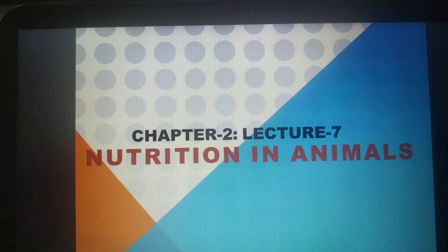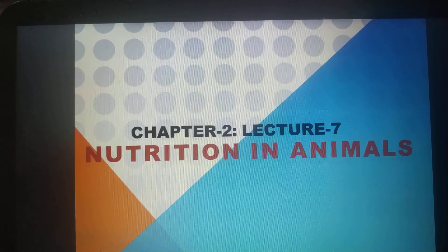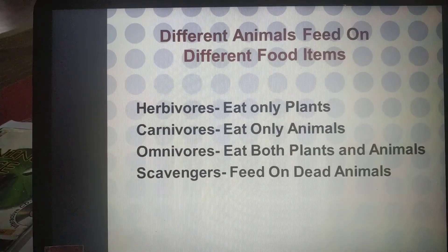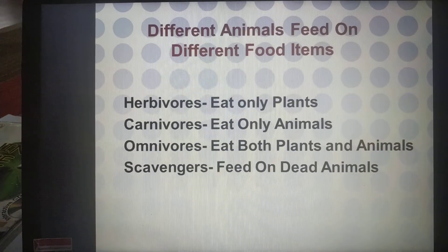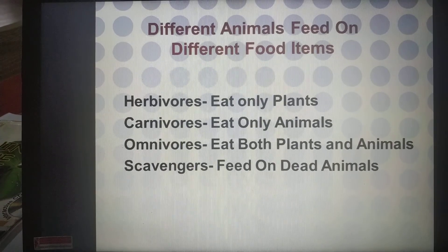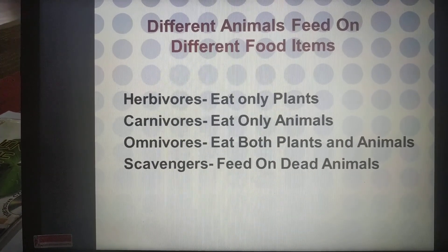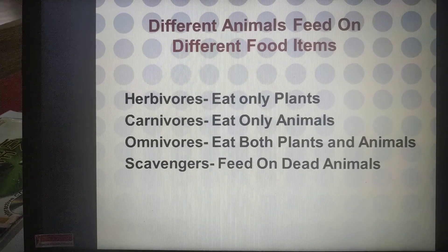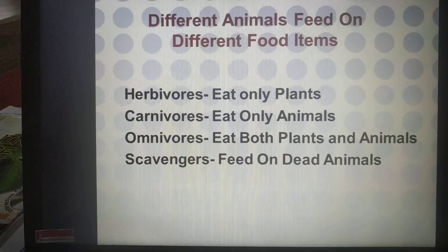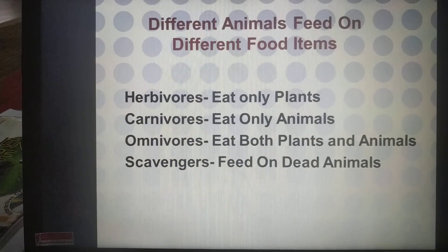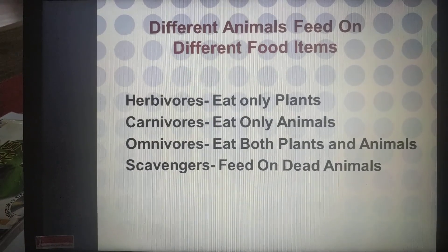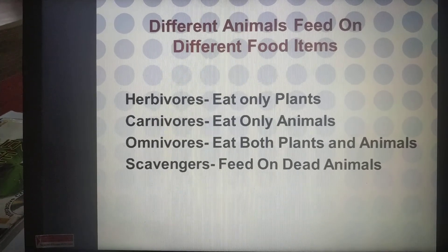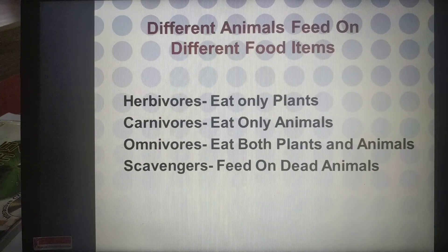Different animals feed on different food items. Herbivores eat plants only — examples are deer, cow, and buffalo. Carnivores eat animals — examples are lion, tiger, and fox. Omnivores eat both plants and animals — examples are human beings, dogs, and cats. Scavengers feed on dead animals — examples include jackals and vultures. Think about more examples of each category on your own.